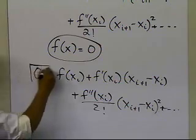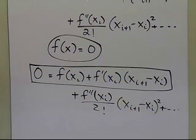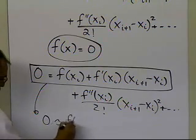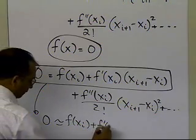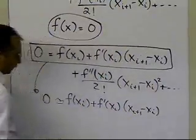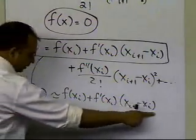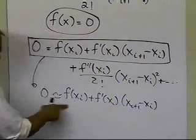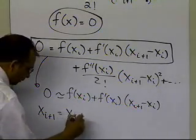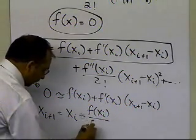If I take only the first two terms of the series and say 0 is approximately equal to f(x_i) plus f prime of x_i times (x_{i+1} minus x_i), I get the Newton-Raphson formula: x_{i+1} = x_i minus f(x_i) divided by f prime of x_i. That is the Newton-Raphson method formula derived from Taylor series.